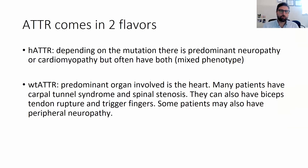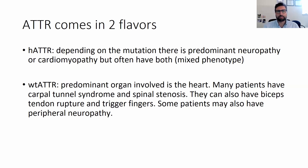The amyloid can deposit in the nerve, and it can be toxic to the nerve even before depositing. It can also deposit in blood vessels, interrupting blood flow and causing fragile blood vessels that can bleed. It comes in two flavors: there's the hereditary condition where the patient has inherited a pathogenic gene variant from their mother or father, and sometimes from both. And there's the wild type that happens as people age, mainly causing heart disease, carpal tunnel syndrome, and spinal stenosis.